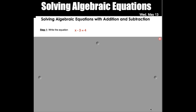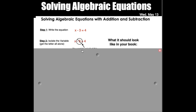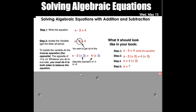Let's look at the steps for solving algebraic equations with addition and subtraction. Step one is to write the equation — each step gets a new line, so you skip a space each time. So: write the equation x minus 3 equals 4. I know you already know what x is, but that's not what we're worried about — we are focused on the steps. Step two is isolating the variable — you want to get the letter all by itself. To do that we need the inverse operation: the inverse of minus three is to add three. Whatever you do to one side of the equation you must do to the other side so that it remains balanced.